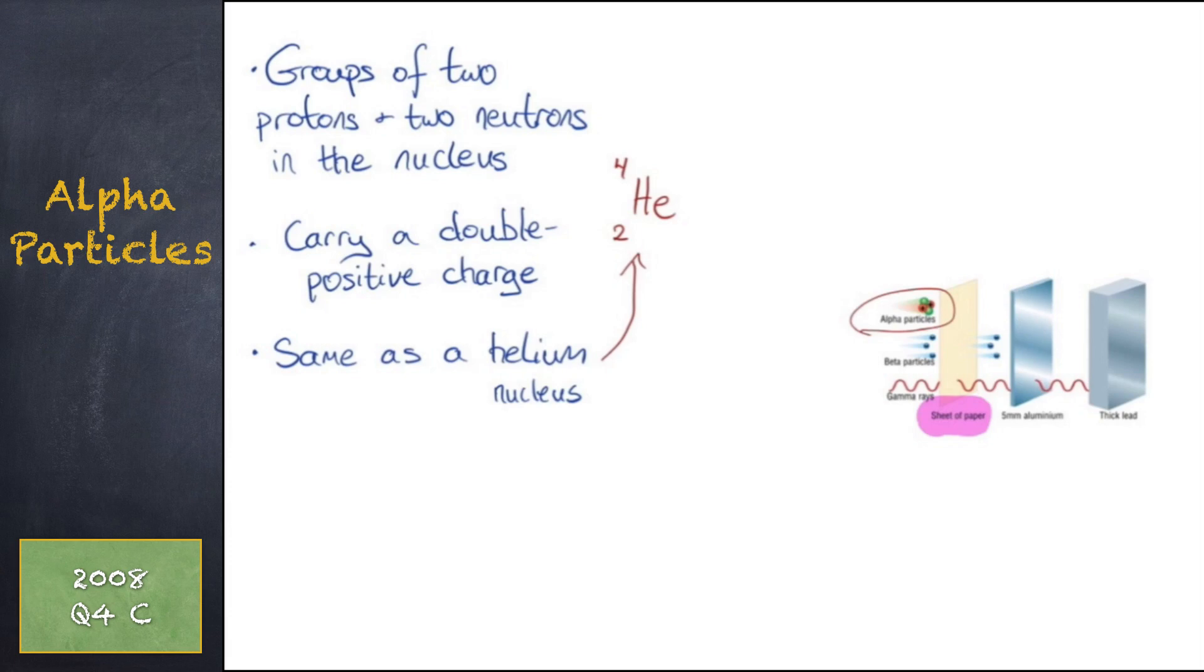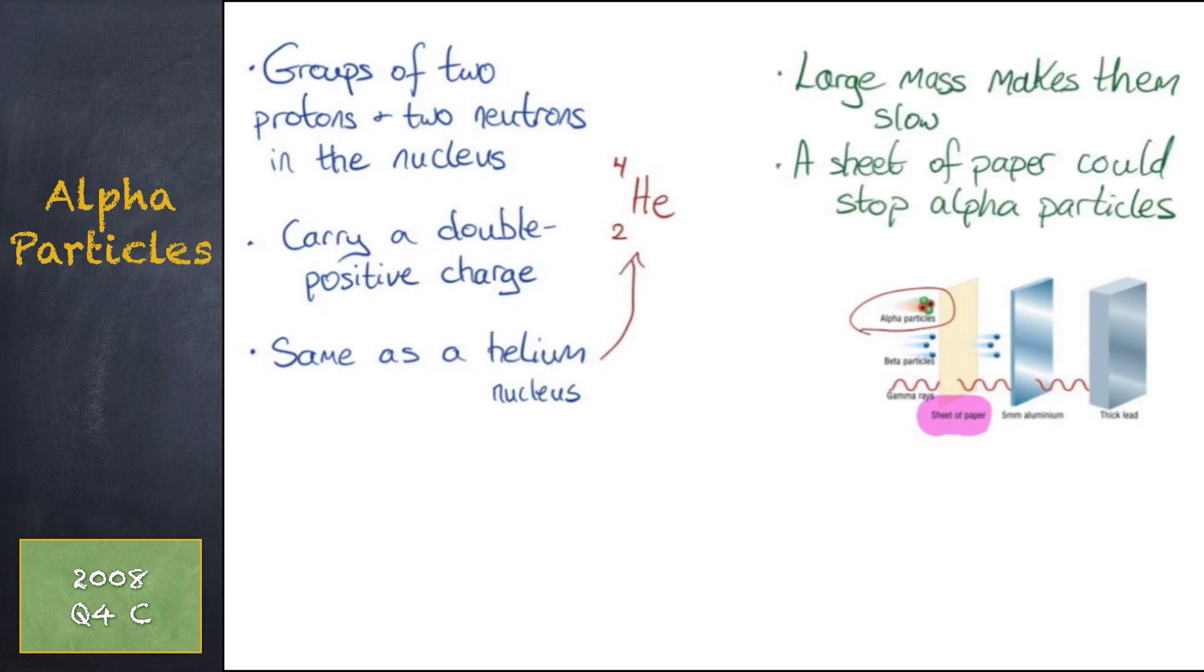It was these alpha particles that Rutherford and his team bombarded thin gold foil to determine the structure of an atom. Alpha particles are quite large compared to the other types of radiation. Because of this, they are slower. Therefore, they cannot penetrate as much as the other two.